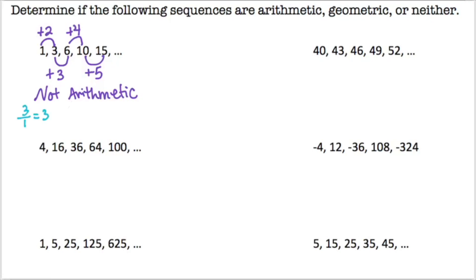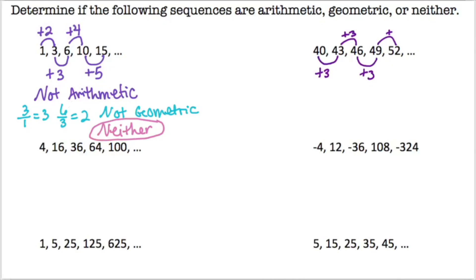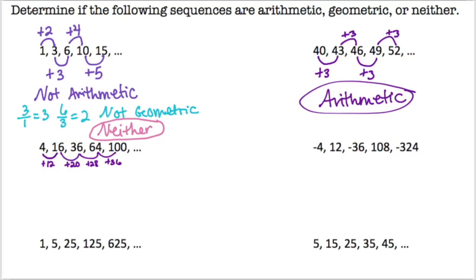The next sequence has a difference of plus 3 each time, so it's arithmetic. For the third sequence — 4, 16, 36, 64, 100 — the differences are 12, 20, 28, 36, so it's not arithmetic. Checking geometric: 16 divided by 4 is 4, but 36 divided by 16 is 2.25 — those don't match, so that one is neither as well.